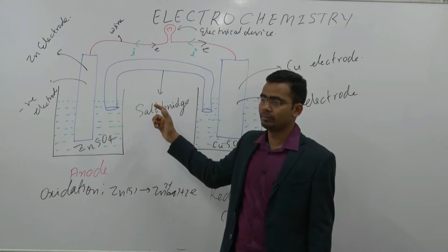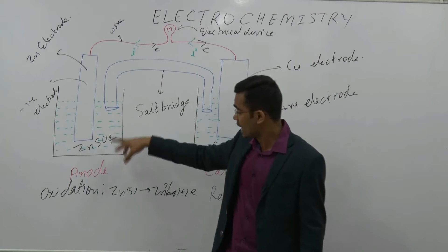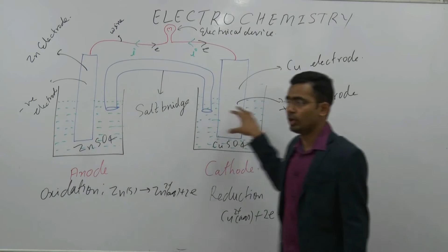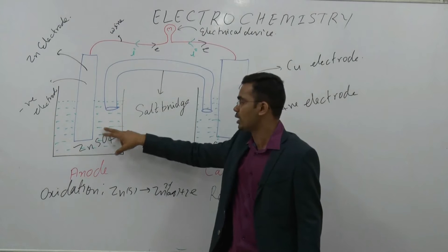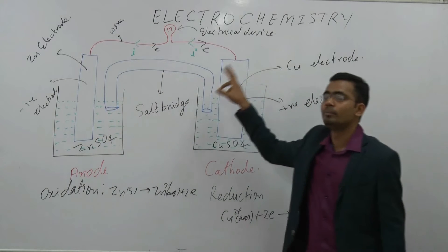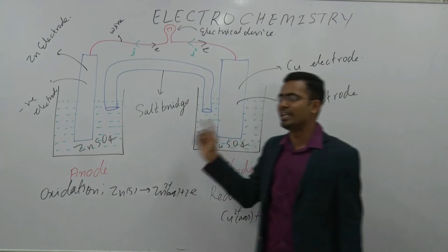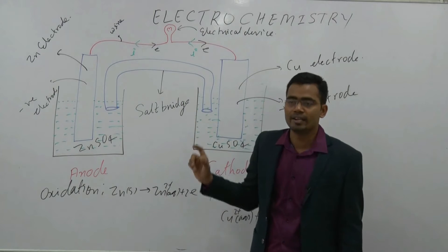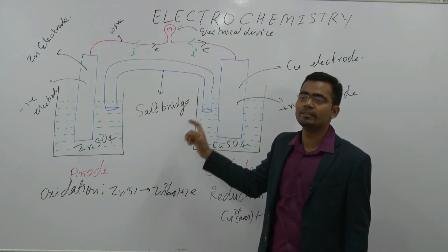The salt bridge contains an electrolyte like KCl or KNO3, which neutralizes both compartments. In the anode compartment, anions come to neutralize the Zn2+, and in the cathode compartment, cations come to maintain balance. If you use KCl, Cl- flows into one compartment and K+ flows into the other. The first function is to maintain electrical neutrality, and the second is that it completes the circuit.